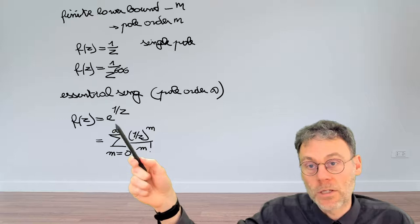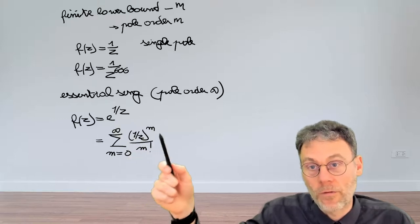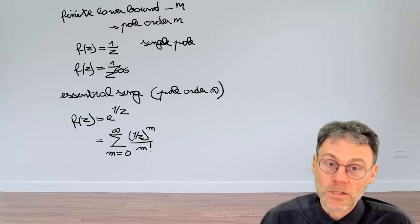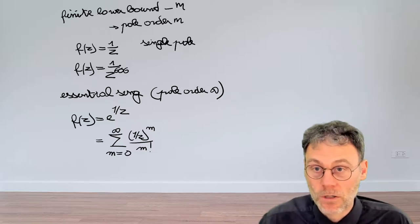And then you can clearly see, because m goes all the way to plus infinity here, that you have an infinite number of negative powers of z. So this is an essential singularity.